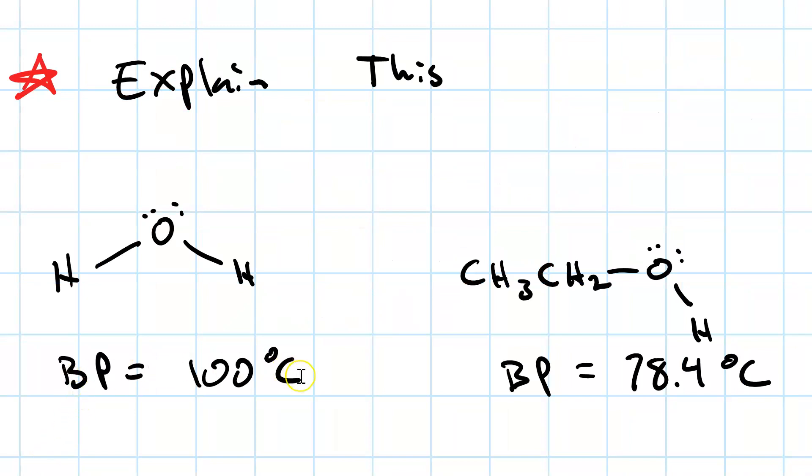Now, water has a boiling point of 100 degrees Celsius. Ethanol has a boiling point of 78.4 degrees Celsius. Can you explain this difference in boiling points based on intermolecular force? Pause your video and give it a try.